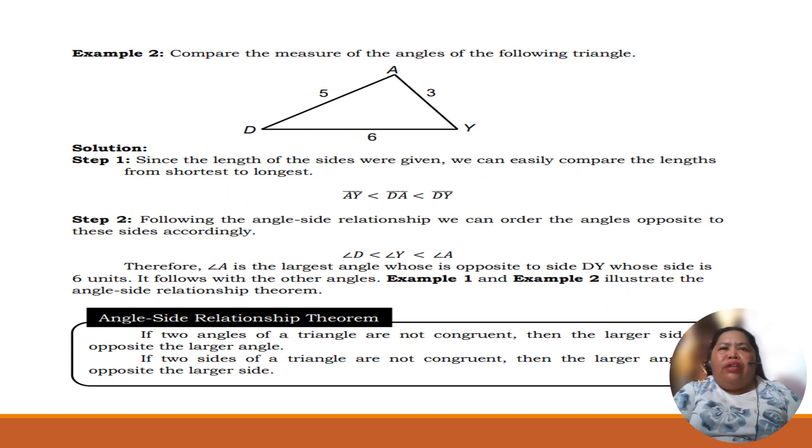Step 2. Compare the measurements of the angles of the following triangle. Since the length of the sides are given, we can easily compare the lengths of the sides. We could say that AY is less than DA, and DA is less than DY. Following the angle-side relationship, we can order the angles opposite to this accordingly. So therefore, angle A is the largest angle whose opposite side DY is 6 units. It follows with other angles.